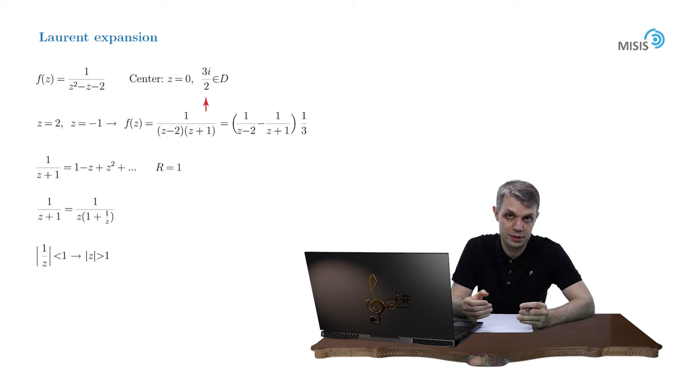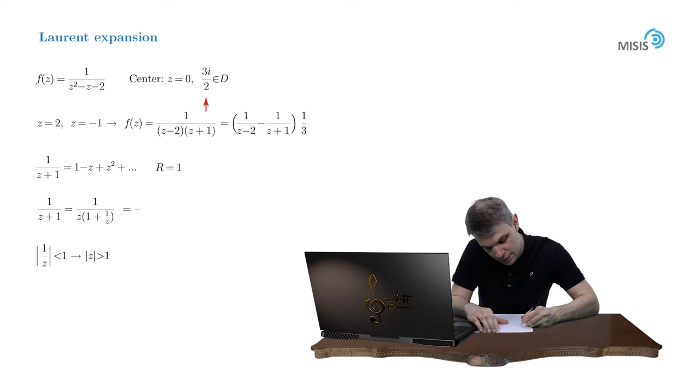And that suits our purpose quite well, because this is precisely where our initial point is positioned. So the second fraction gives us the expansion in negative powers of z. And here we go. We write down 1 over z, the sum from 0 to plus infinity, negative 1 to the power of n, divided by z to the power of n.